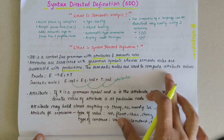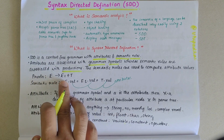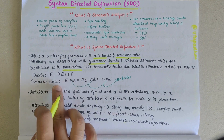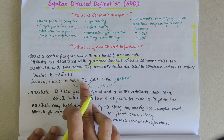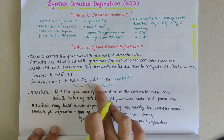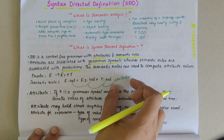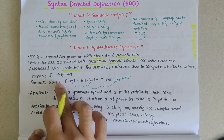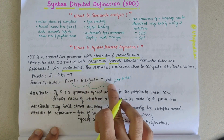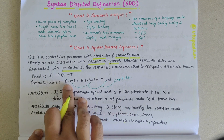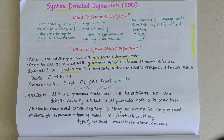Semantic rules are used to compute attribute values. Consider the production E → E1 + T. Writing a semantic rule for that would be: E.val = E1.val + T.val. Here, 'val' represents the attributes associated with grammar symbols. The value of E is computed by adding the value of E1 and T and storing it in E.val. That's what this semantic rule means.